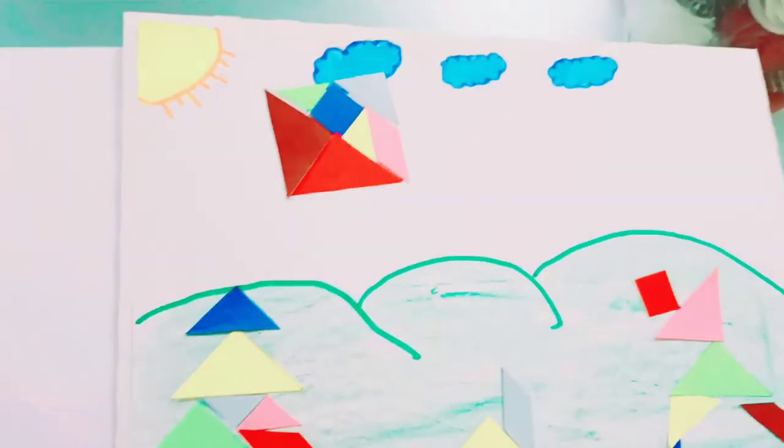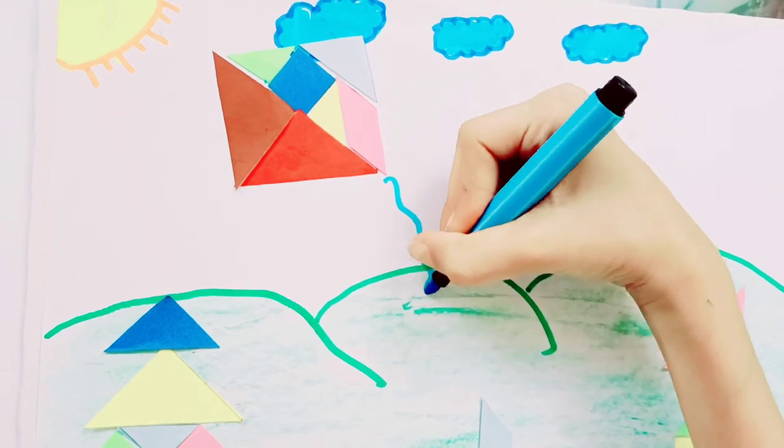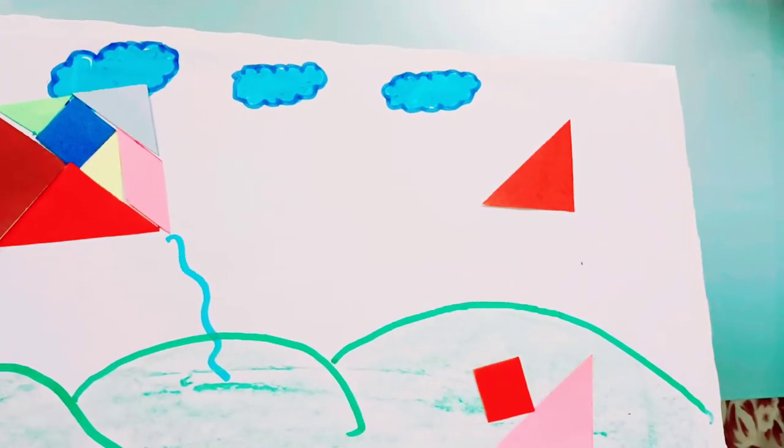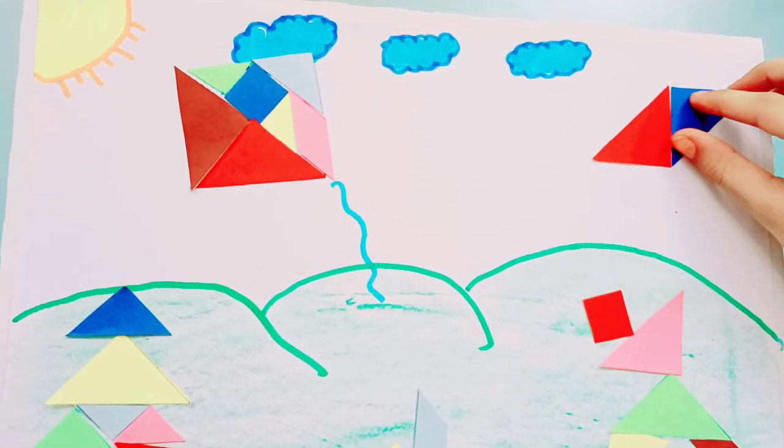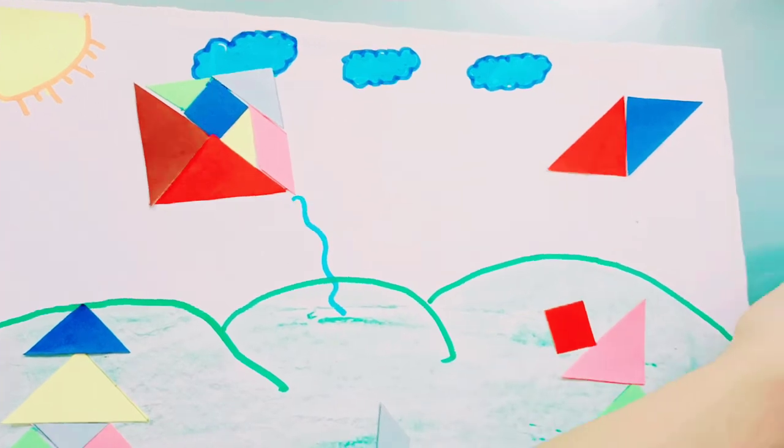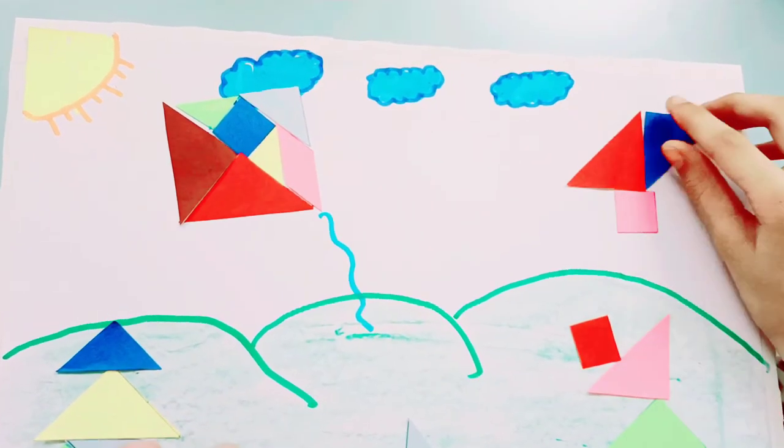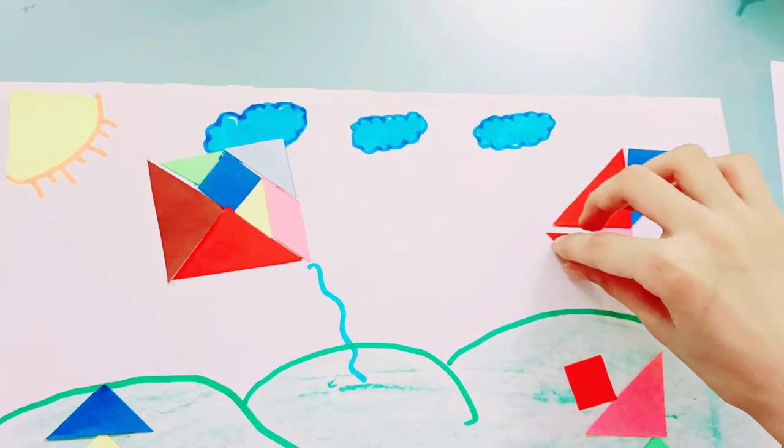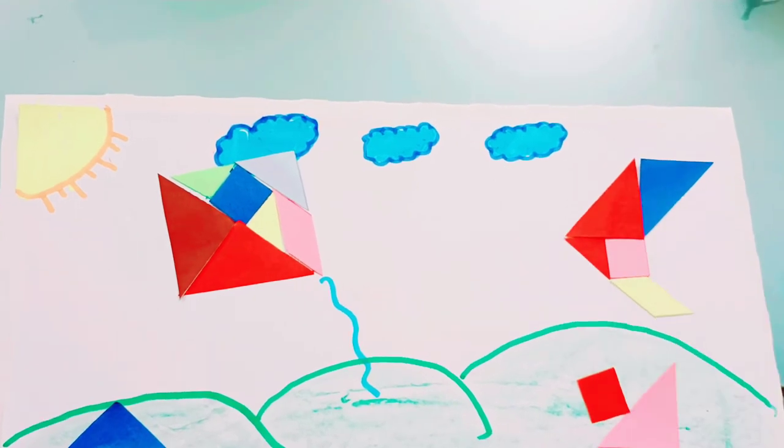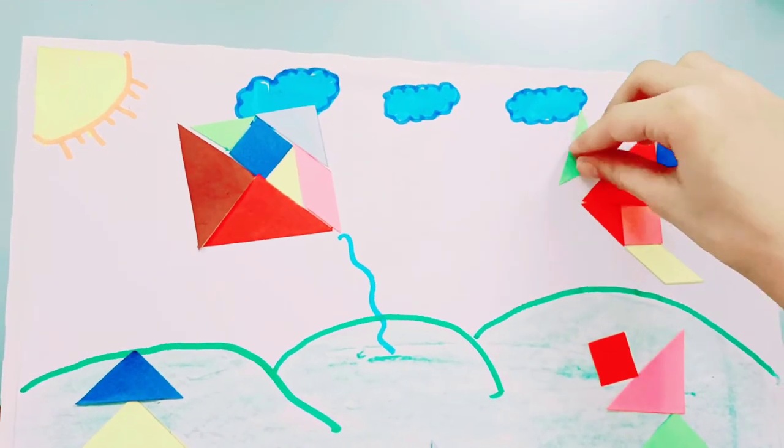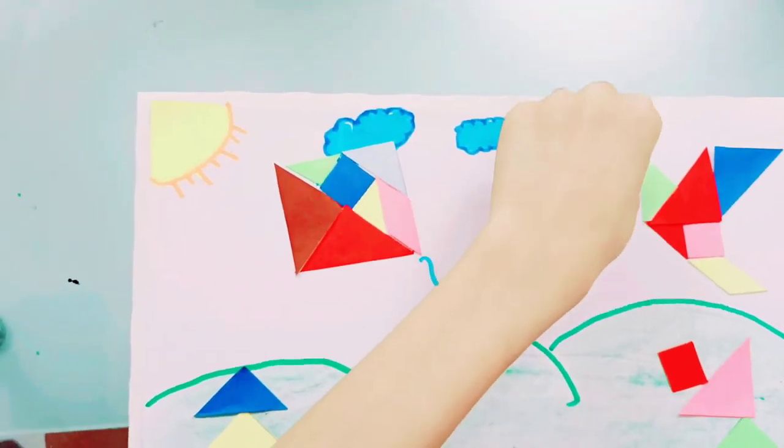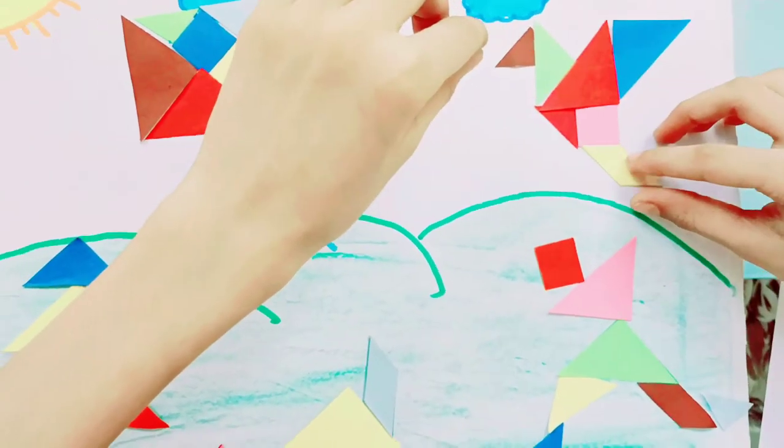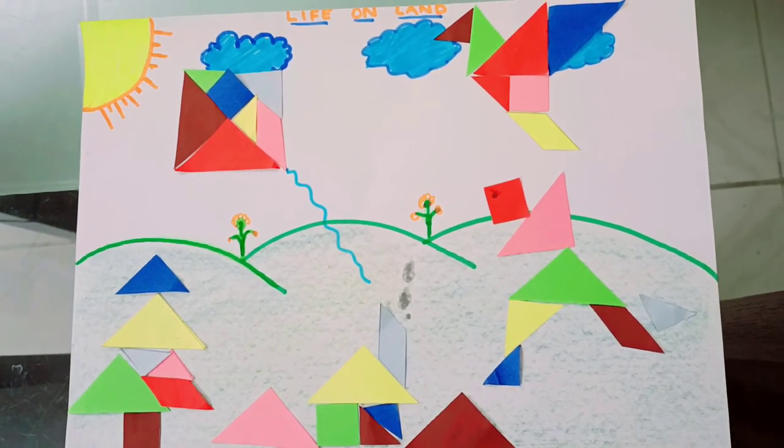So here's a kite, so now I'm going to make a bird. Here's a kite. Here's a bird. So this is my tangram collage, Life on Land.